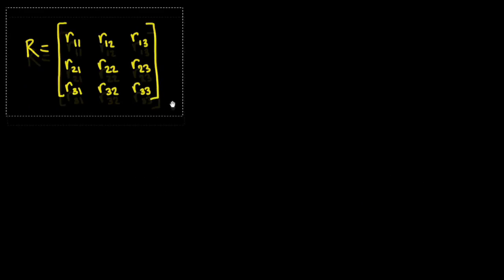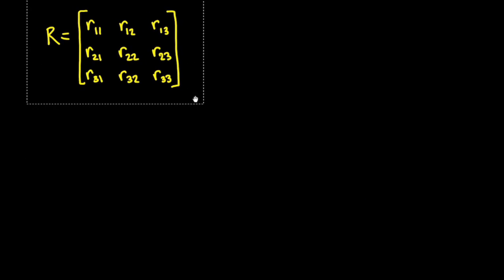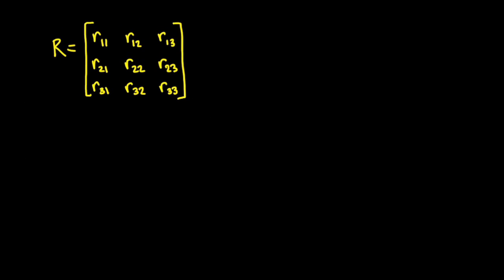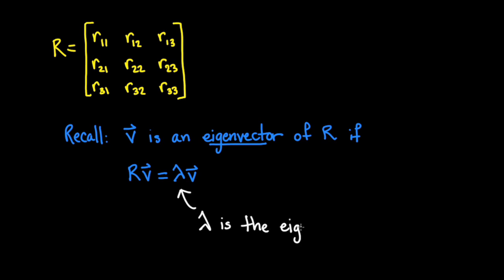We can learn a lot about a matrix by examining its eigenvalues and eigenvectors. Recall that a vector v is an eigenvector of a matrix if it is sent to a scalar multiple of itself when acted upon by the matrix. That scalar is the eigenvalue.